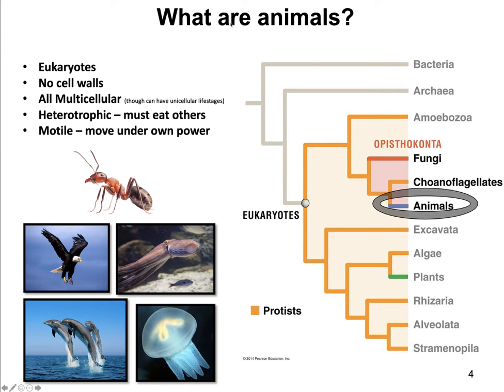Let's understand what I mean when I say an animal. So an ant, an eagle, a squid, a jellyfish, a dolphin — these are all examples of animals.